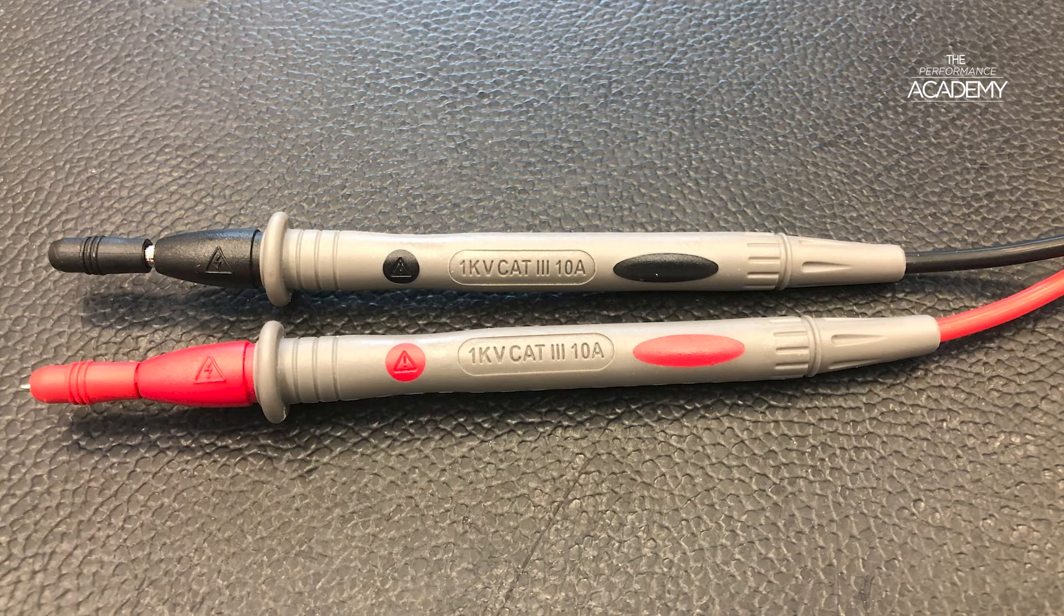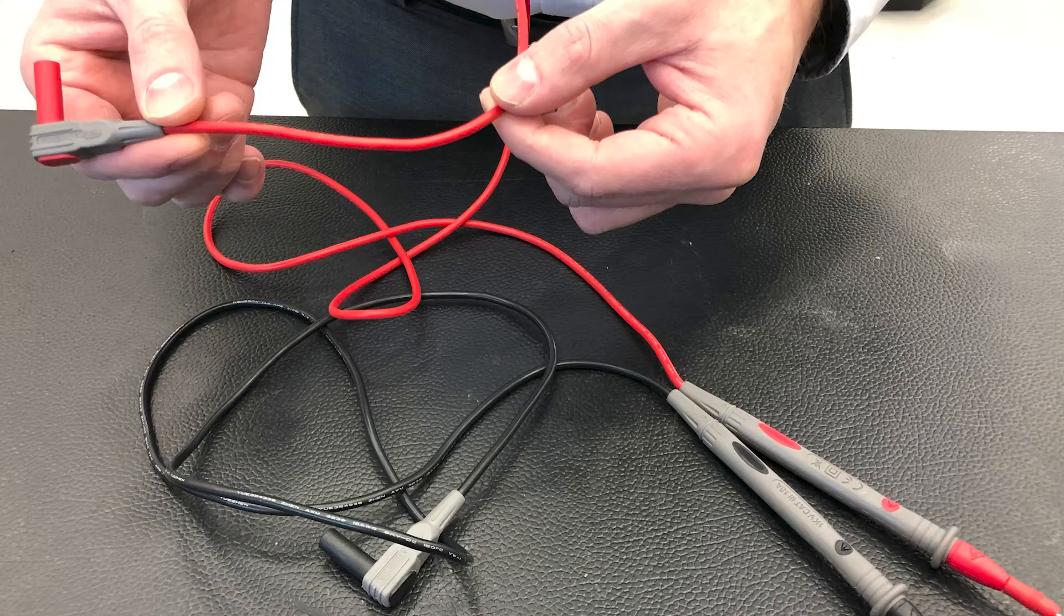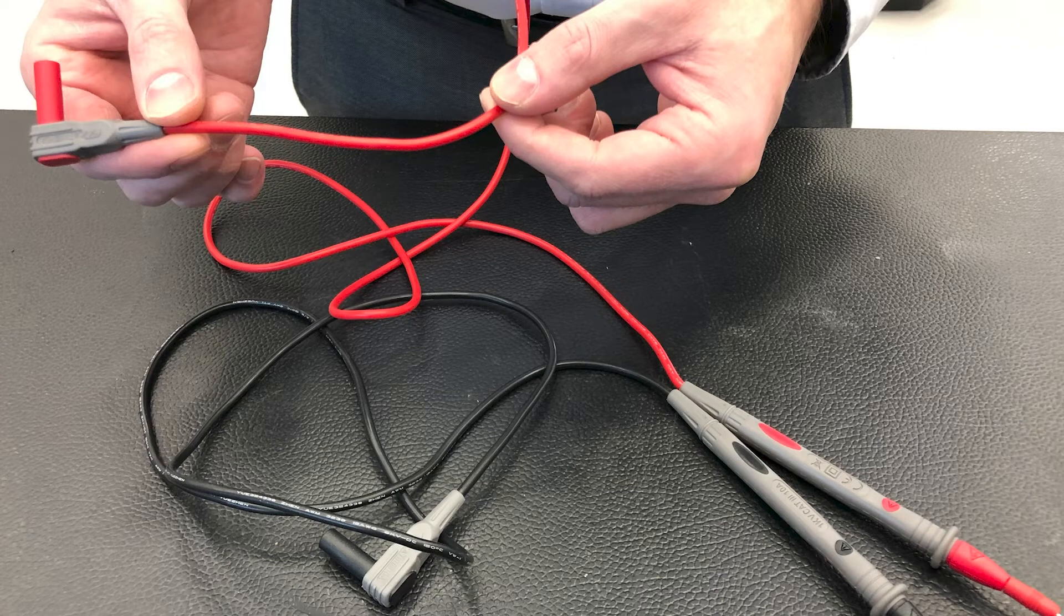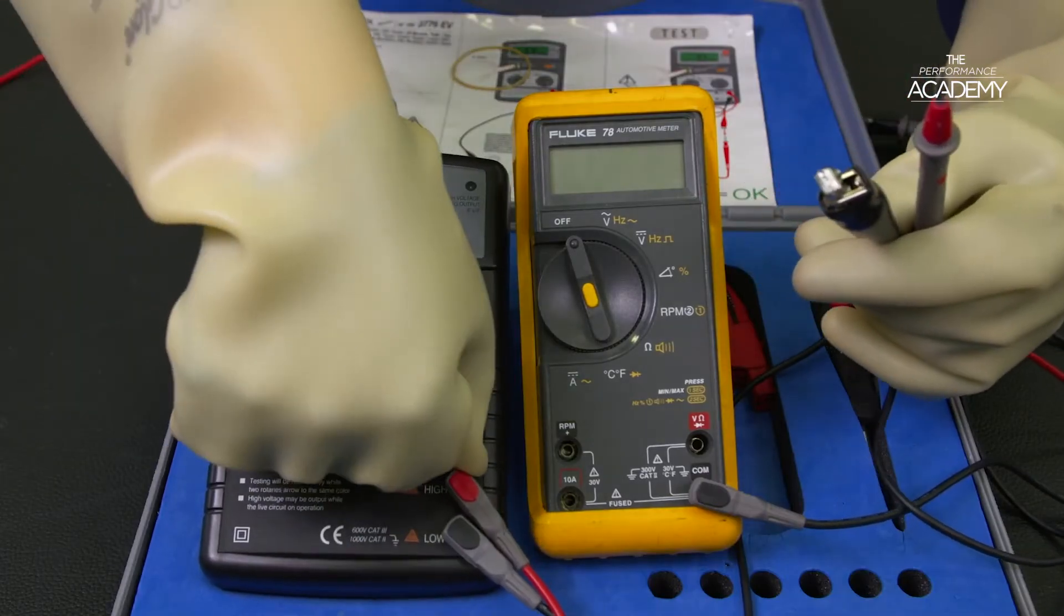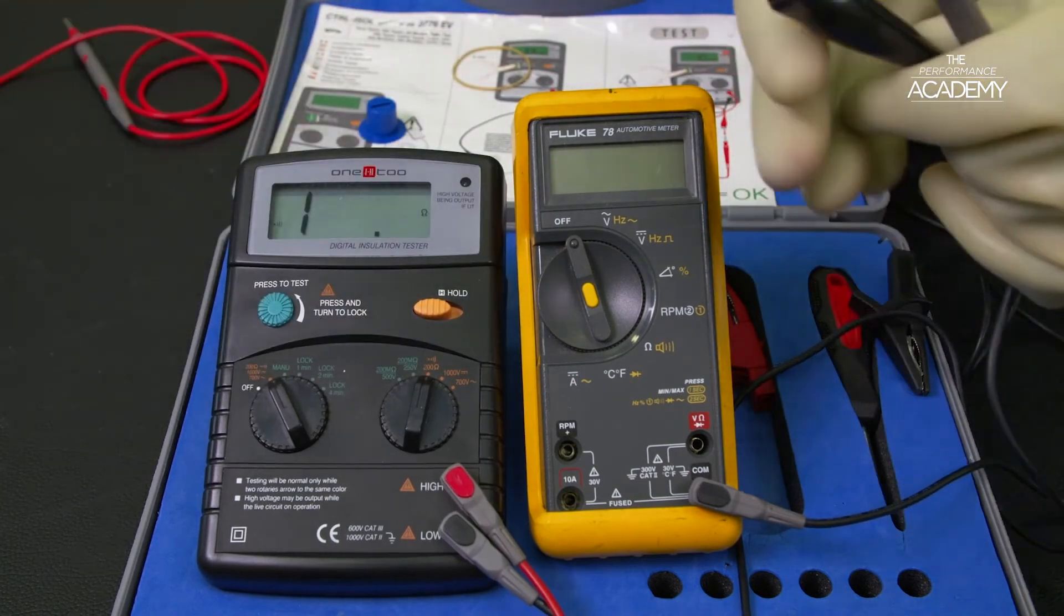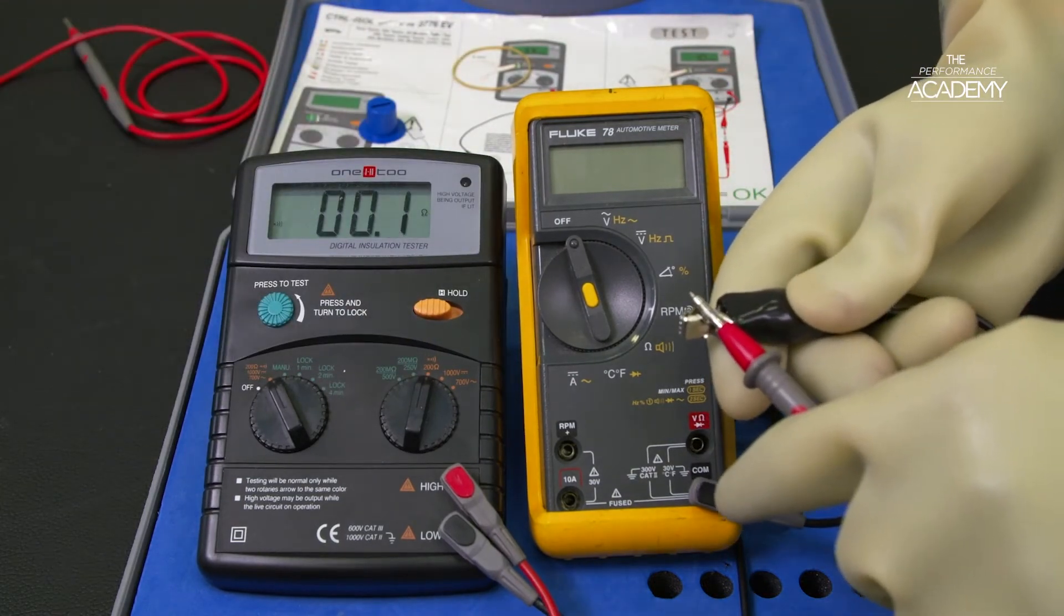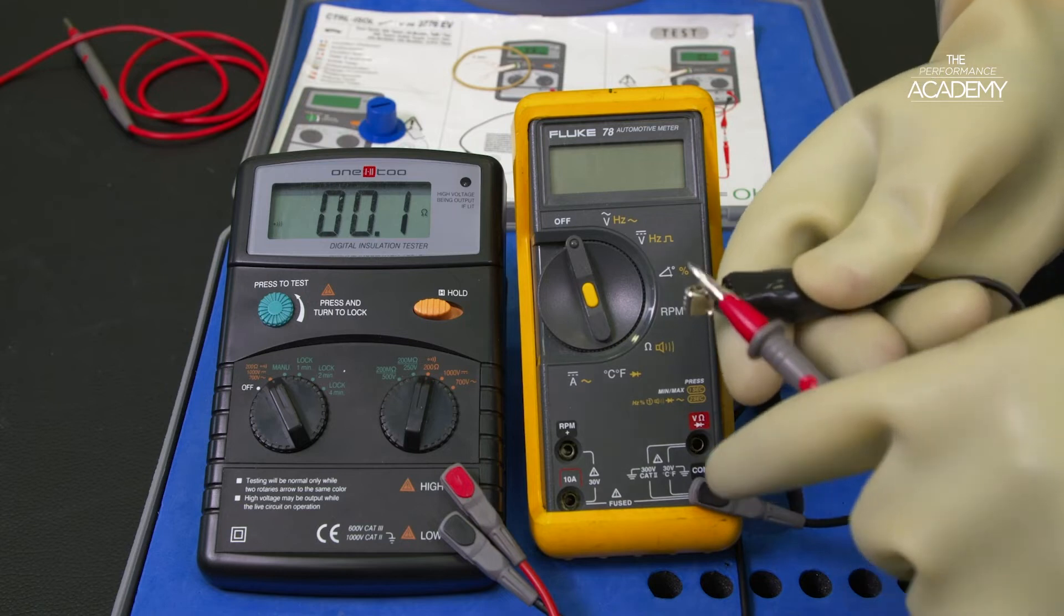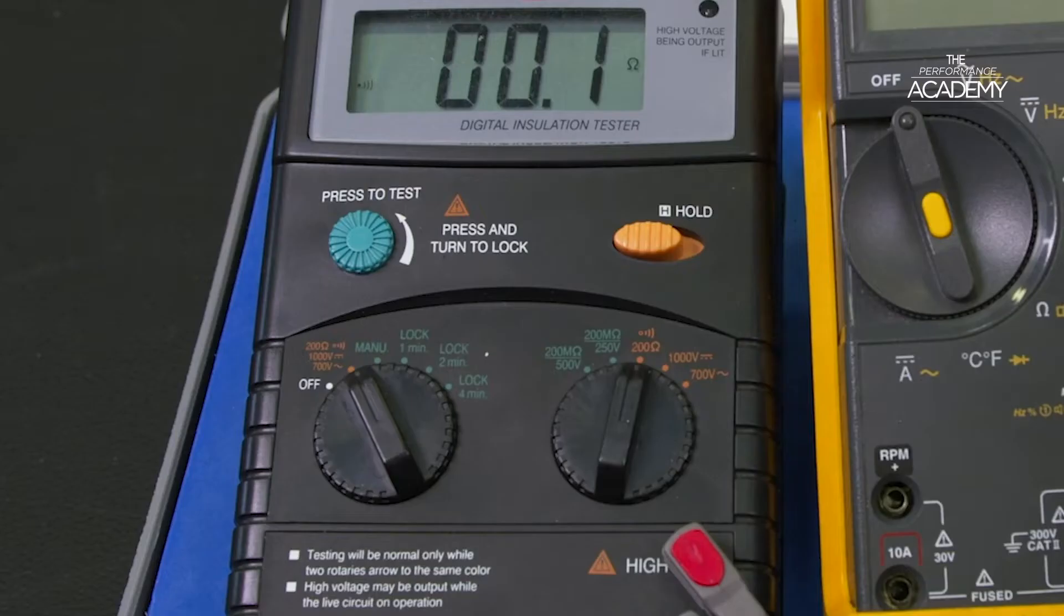First we carry out the three checks on the test leads themselves. First check to ensure they have cat 3 600 volt or higher insulation rating. Second we check them for any damage to the insulation connections or terminals. And third and final check is a continuity and resistance test. We need a very low internal resistance of no more than 0.6 of an ohm really. This is easily done by using the normal resistance test settings coloured orange on the insulation tester.